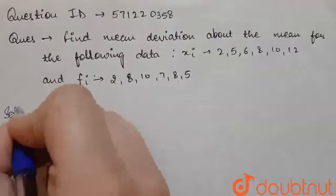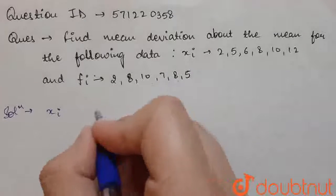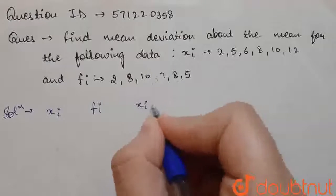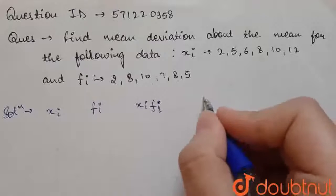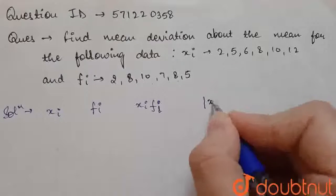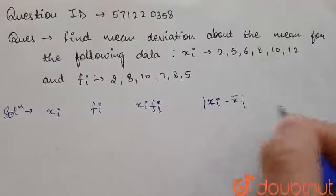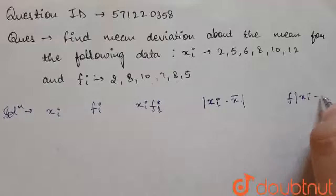For solution part, what we will do, we will make a table for this. Xi, fi, xi fi. Then we will calculate mod of xi minus x bar. Then we will calculate f times xi minus x bar.